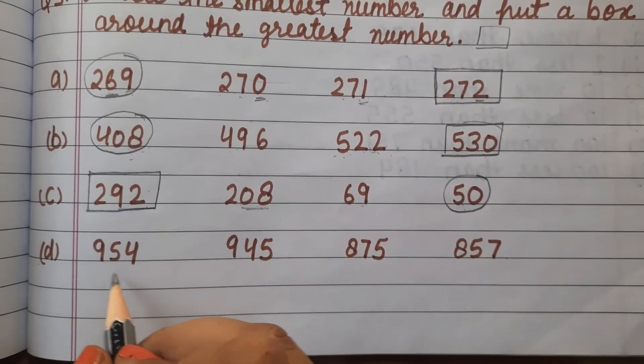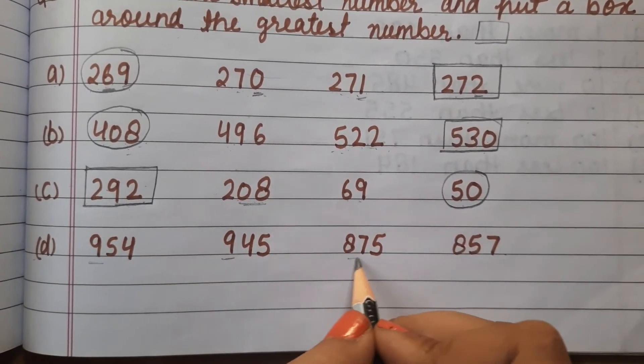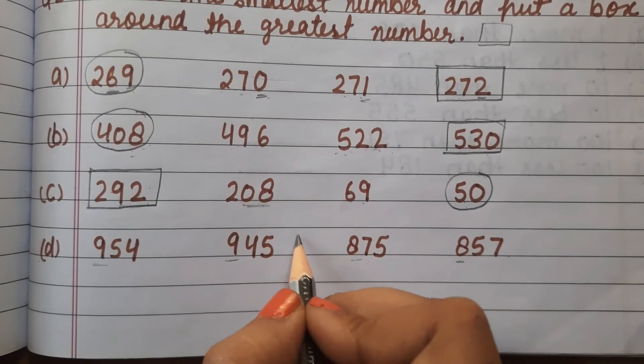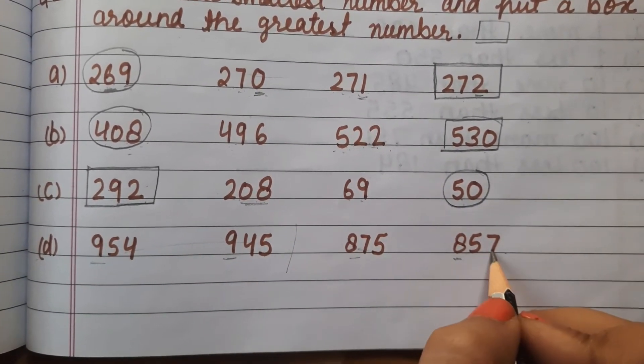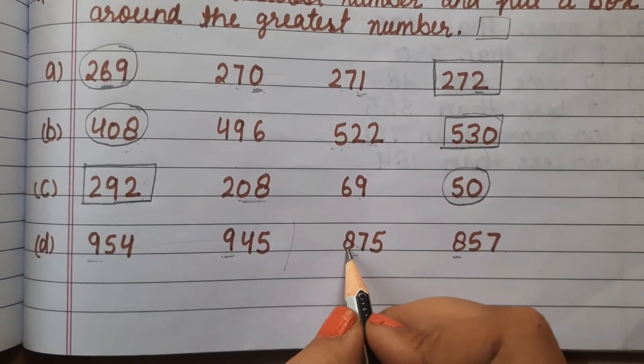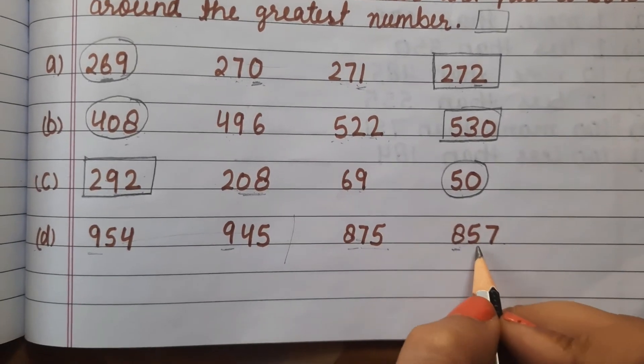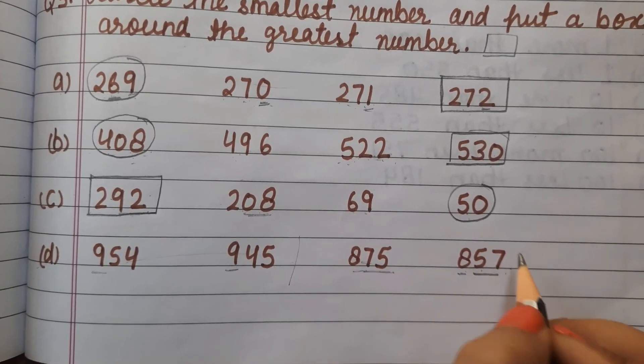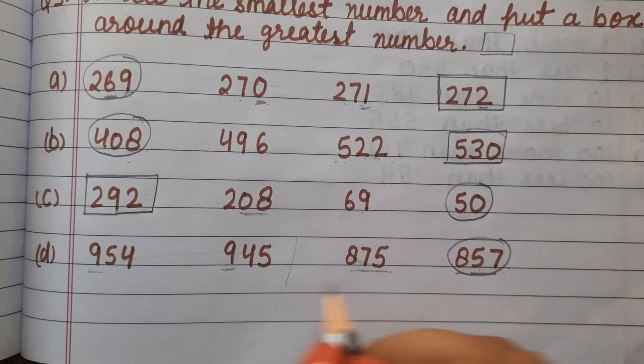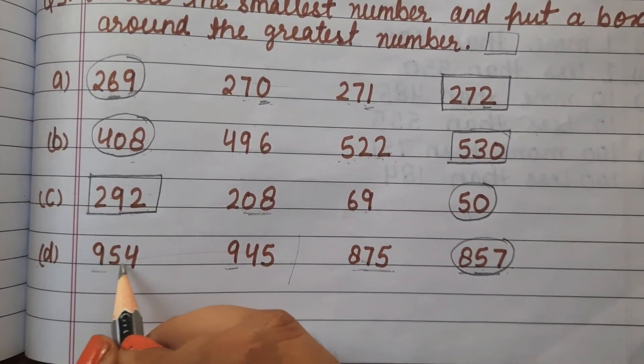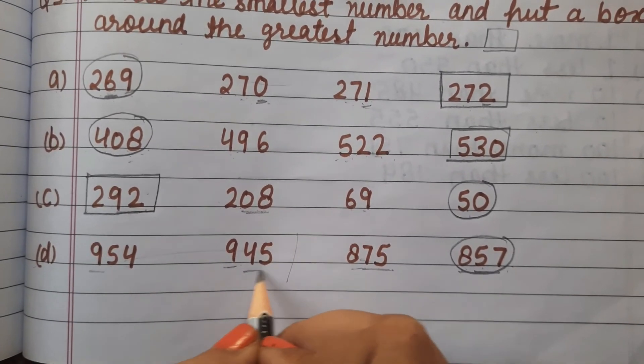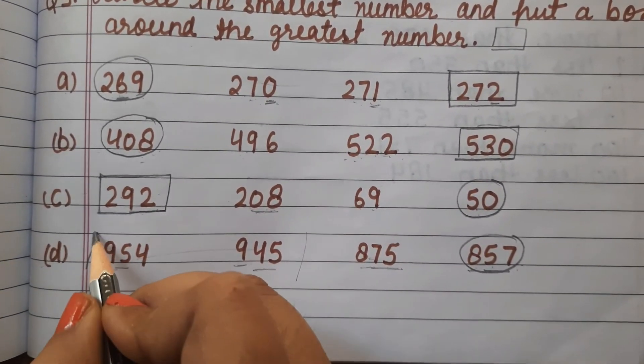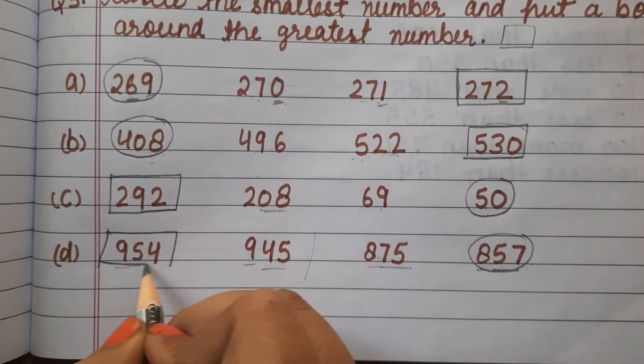945, 875, 857. The hundreds place has 9 and 8, so we'll divide into two parts to compare. 875 and 857 - look carefully at 75 and 57. So 857 is the smallest. And between 954 and 945, which number? 954 is the biggest or greatest number.